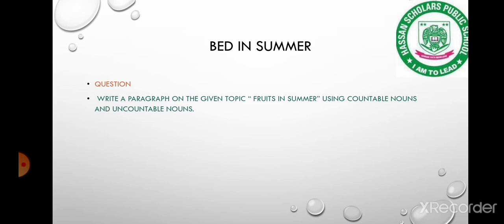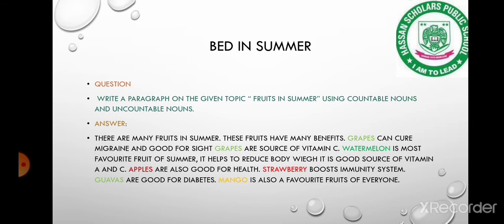Here is our next question: write a paragraph on the given topic 'Fruits in Summer' using countable nouns and uncountable nouns. Here is its answer: there are many fruits in summer and these fruits have many benefits. Grapes can cure migraine and are good for eyesight.